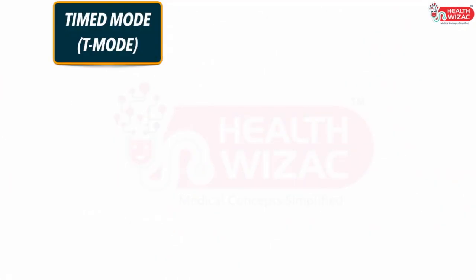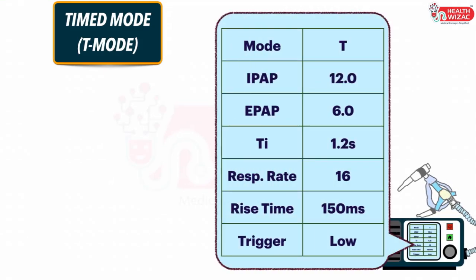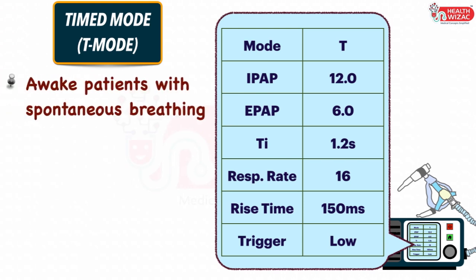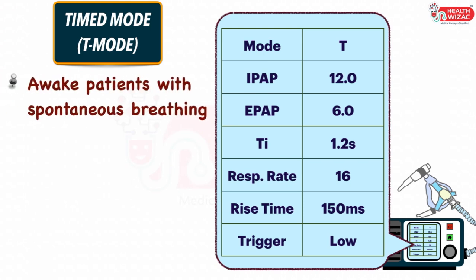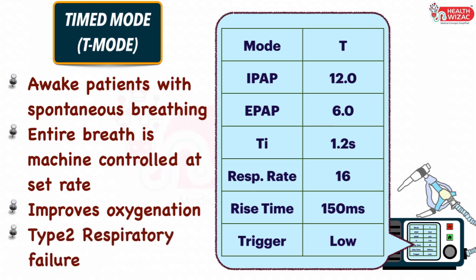Next is T mode or Timing mode, also specific for BiPAP machines only. In this, we set: IPAP and EPAP value, Inspiratory Time settings, Respiratory Rate, Rise Time, and Trigger Sensitivity. This mode is used in awake patients with spontaneous breathing, but compared to S mode, the entire breath is controlled by the machine only and delivered at the set rate. This helps in improving oxygenation and is very useful for patients with type 2 respiratory failure.